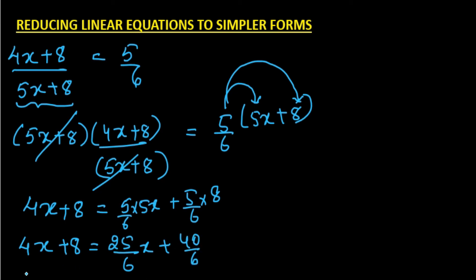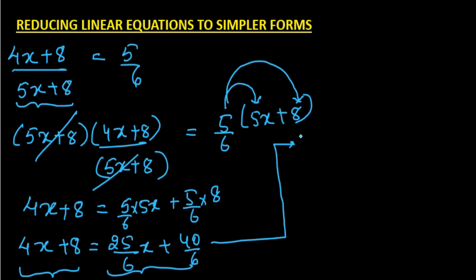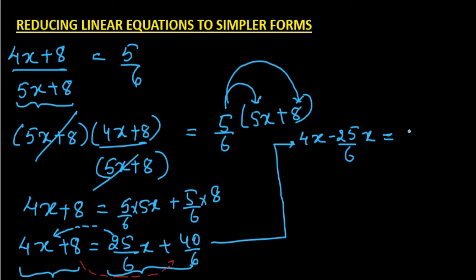This now looks like the basic form with a linear expression on both sides of the equality. Transposing (25/6)x to the left side and 8 to the right side, we get 4x − (25/6)x = 40/6 − 8.